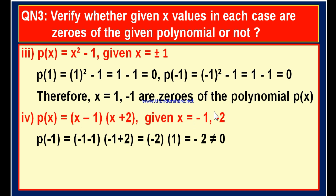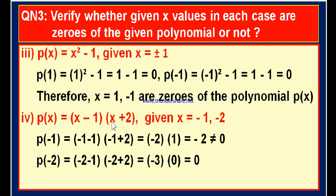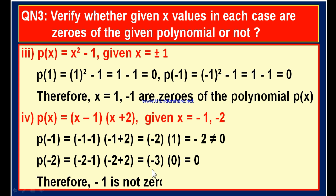Now let us verify what will happen if x is equal to minus 2. P of minus 2 is equal to minus 2 minus 1 into minus 2 plus 2. Minus 2 minus 1 is minus 3; minus 2 plus 2 is 0. Minus 3 into 0 is 0. Since the value of the polynomial becomes 0 when we substitute x is equal to minus 2, minus 2 is a zero of the polynomial. So, minus 1 is not a zero because P of minus 1 is not 0, and minus 2 is a zero because P of minus 2 is 0.